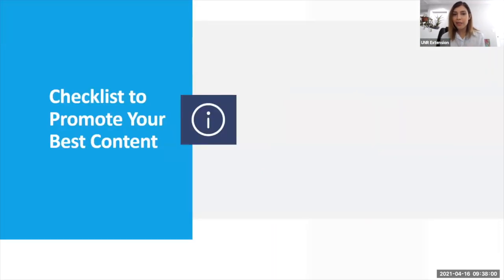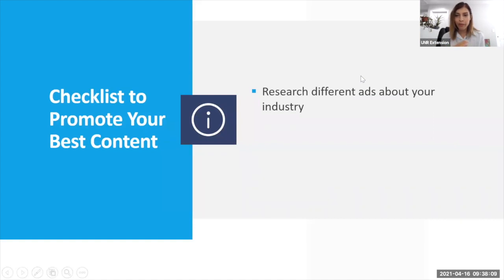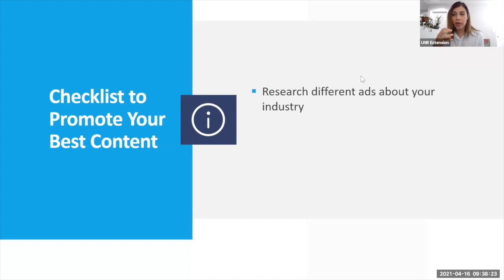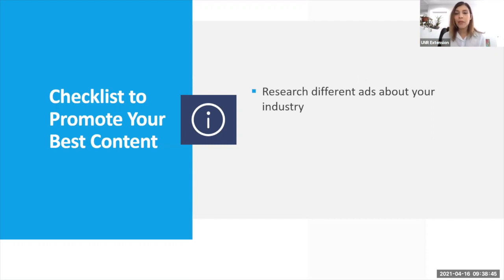Checklist to promote your best content. First: research different ads about your industry. Don't be afraid to see what others are doing and what's working for them — if it's working for them, it's going to work for you. Do your research. See what the big restaurant chains are creating. If you're in landscaping, research other landscaping companies, see how they're presenting their ads, and try to do it too.